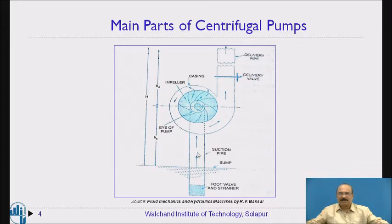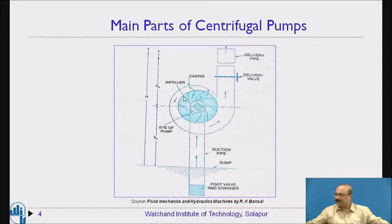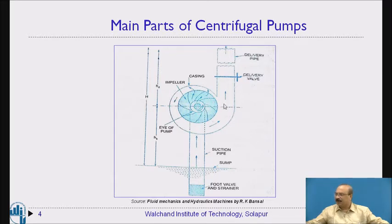In working condition, the centrifugal pump operates as follows. The shaft is connected to the motor; electrical energy is supplied to the motor and converted into mechanical energy. That mechanical energy is utilized by the shaft, which is connected to the impeller. The impeller has curved blades. When the shaft starts rotation, the impeller also starts rotating. Water is sucked through the suction pipe. Before starting the motor, we fill the complete pipe with water — that is, we remove the air inside the pipe. This is called priming of the pump.